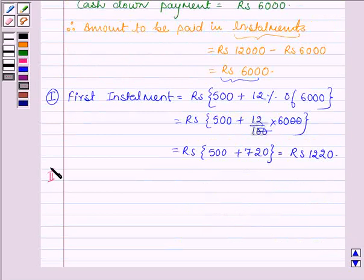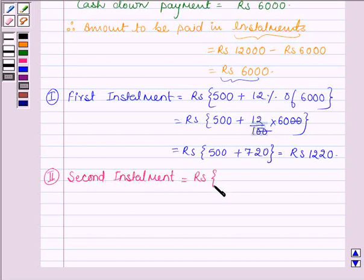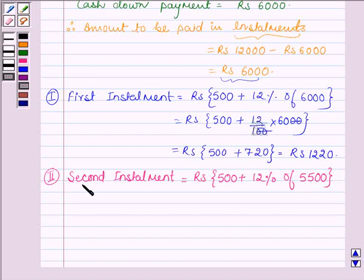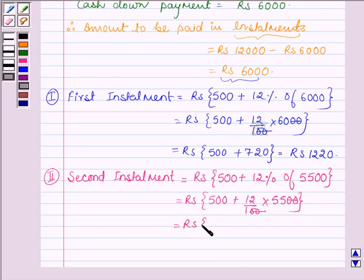Now let us find the second installment. It is equal to Rs. 500 plus 12% of the unpaid amount, which is Rs. 5,500 — that is Rs. 6,000 minus Rs. 500 paid in the first installment. So this is equal to Rs. 500 plus 12 upon 100 into Rs. 5,500, which is further equal to Rs. 500 plus Rs. 660, which is equal to Rs. 1,160.